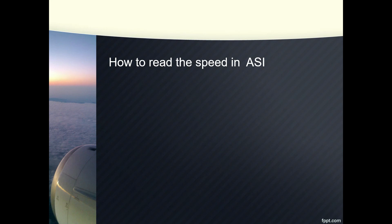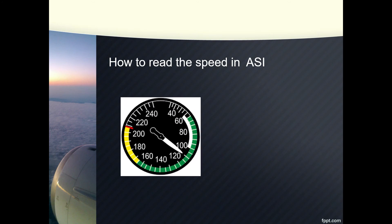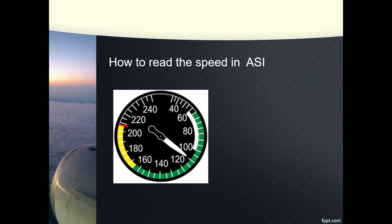The ASI is basically a dial with a pointer which tells the pilot how fast the aircraft is going, which is measured in miles per hour or knots. Knots are a measure of speed. As you can see in the picture, the pointer is pointed at 110 knots, which means the speed of the aircraft is 110 knots.